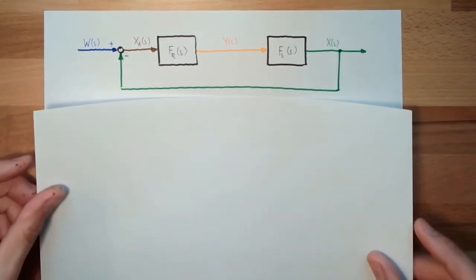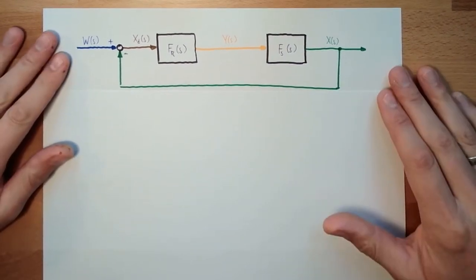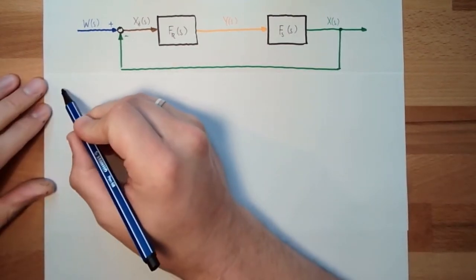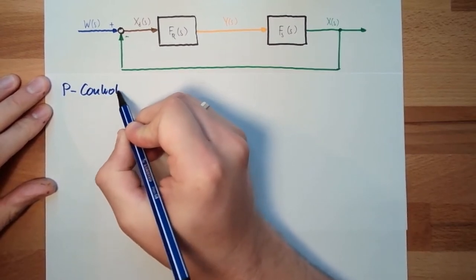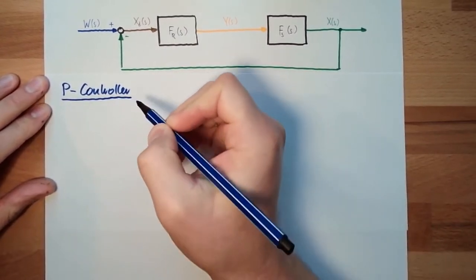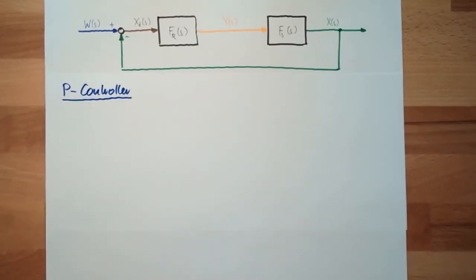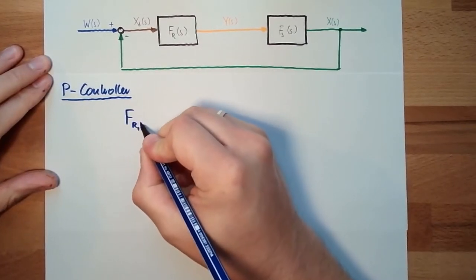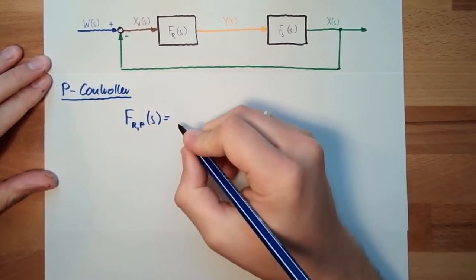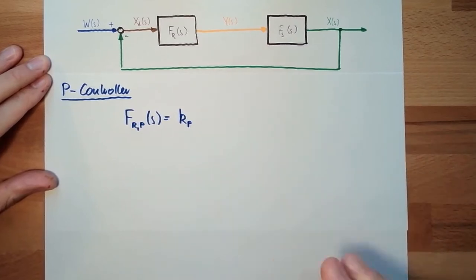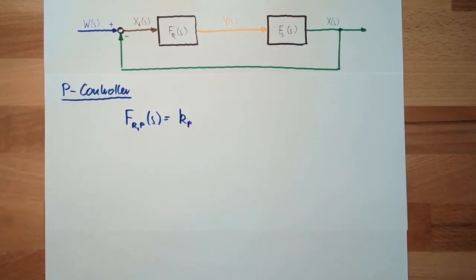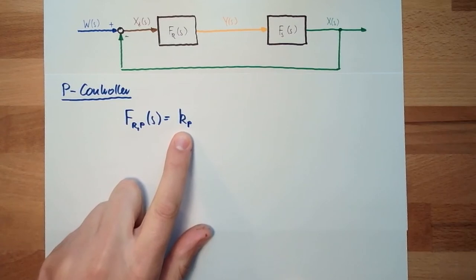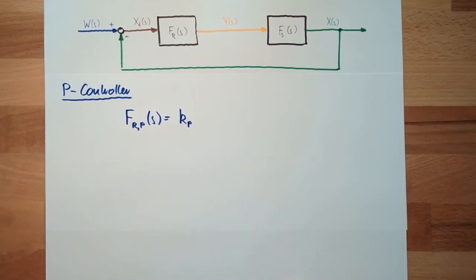First controller type, first type of this transfer function is the so-called P controller. In a P controller, the transfer function is a P element. So FR for P controller is KP, just some factor. It is the gain, controller gain, proportional factor.